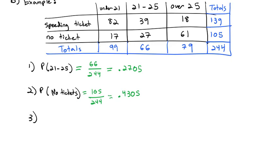We can also do ands and we can do ors. We can find, let's combine these together, the probability that someone's 21 through 25 and has no tickets. Well, the 21 to 25 and have no tickets are when both of those occur together at the same time. That's where they overlap. Here in the middle, we have 27 people who are no tickets and they're 21 to 25. Out of the total of the whole group is still 244. And so when I divide 27 by 244, we get 0.1107.